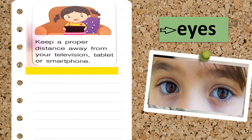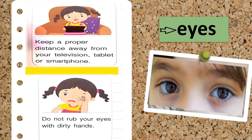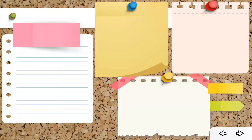Keep a proper distance away from your television, tablet, or smartphone when you are watching — you should not be too close, to protect your eyes from radiation. Also, do not rub your eyes with dirty hands, because the dirt might get inside your eyes.